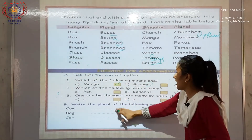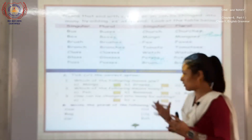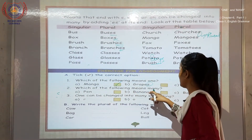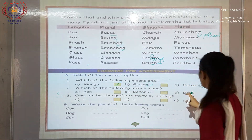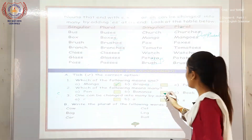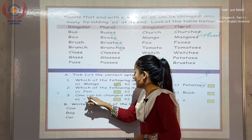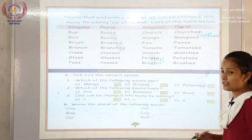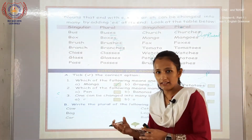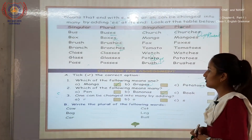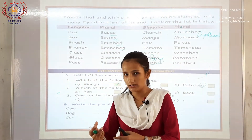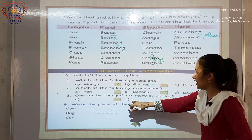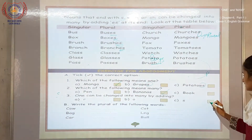Which of the following means many? Many means plural. P-E-N — pin — this is singular. B-A-N-A-N-A-S — bananas — this is plural. B-O-O-K — book — this is singular. So bananas is the plural answer. One can be changed into many by adding — singular se plural convert hota hai — we have to add S.